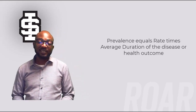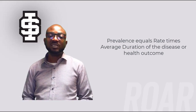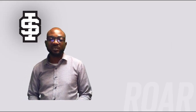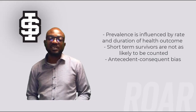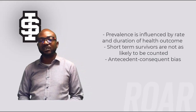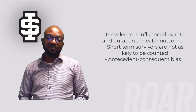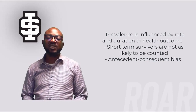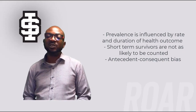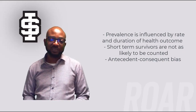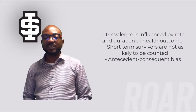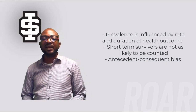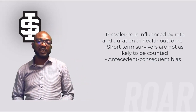Under steady state conditions, prevalence equals rate times the average duration of the disease or health outcome. There are some limitations of cross-sectional studies. For instance, the prevalence is influenced by the rate and duration of the health outcome. People who survive longer with a health outcome will be more likely to be counted in the numerator of a prevalence proportion, while short-term survivors are not as likely to be counted as they are, by definition, around for a shorter time.